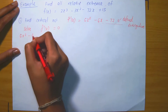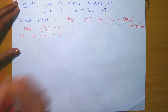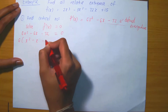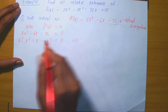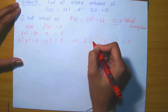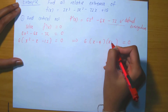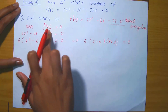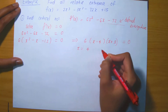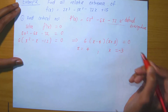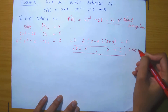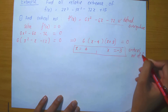We solve 6x squared minus 6x minus 72 equals zero. Factoring out 6 gives x squared minus x minus 12 equals zero. Factorizing further yields (x minus 4)(x plus 3) equals zero. Therefore x equals 4 and x equals minus 3 are the two critical numbers of f.